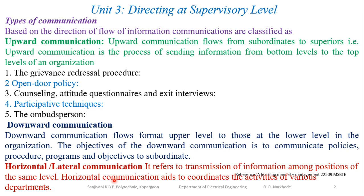Take the example of our college. The principal is at the higher level and the peon is at the lower level. Information flows from the principal to the HOD, and from the HOD to the peon — this is downward communication, where information flows from the top level to the bottom level. If the peon wants to communicate a problem to the principal, he first reports to the HOD, and the HOD reports to the principal — this is upward communication.